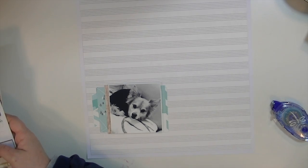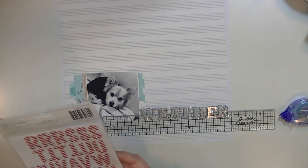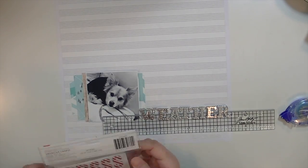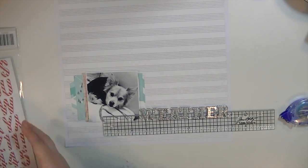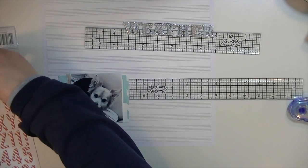So now that I've finished with that part, the highlight of this layout is going to be the title, which is going to be sweater weather. I was originally going to use these silver thickers that are from the kit, but I ended up adhering my photo a little too far to the left.